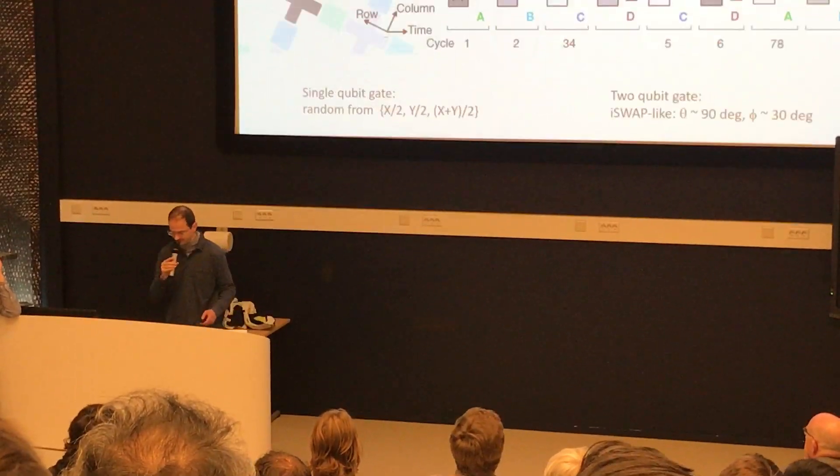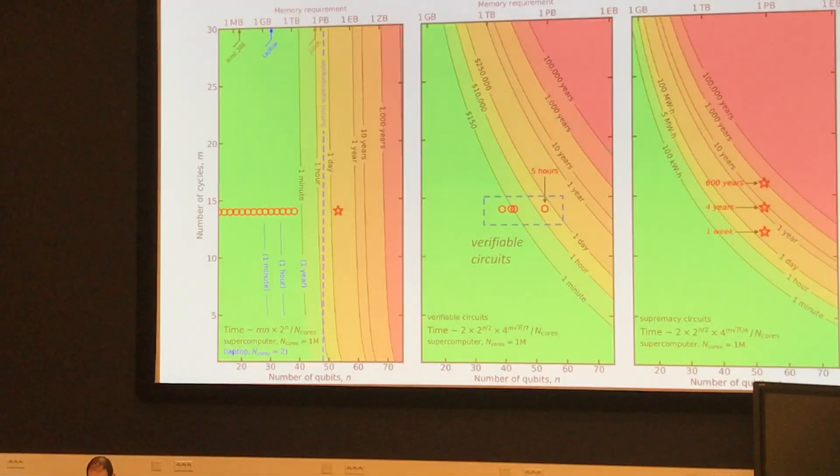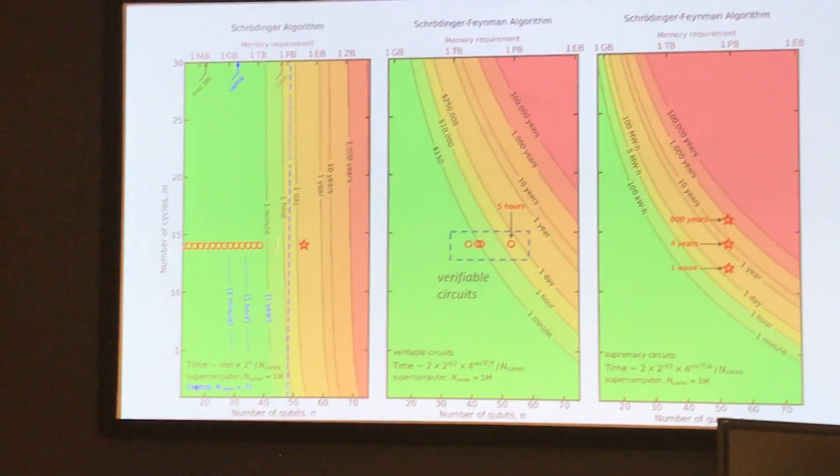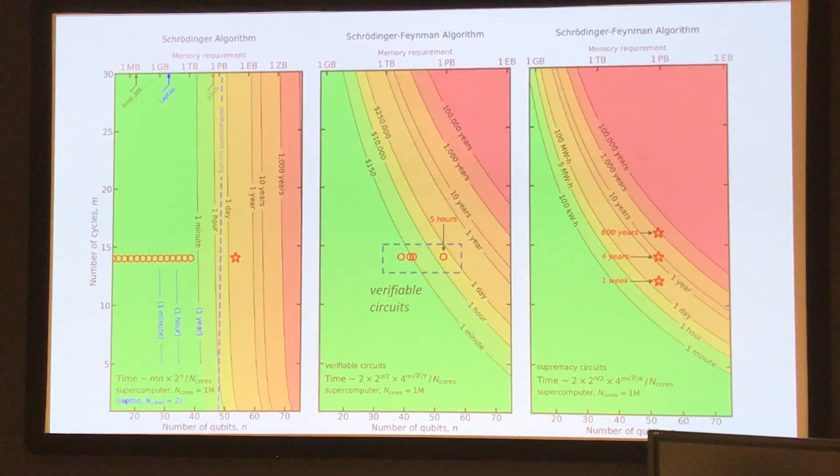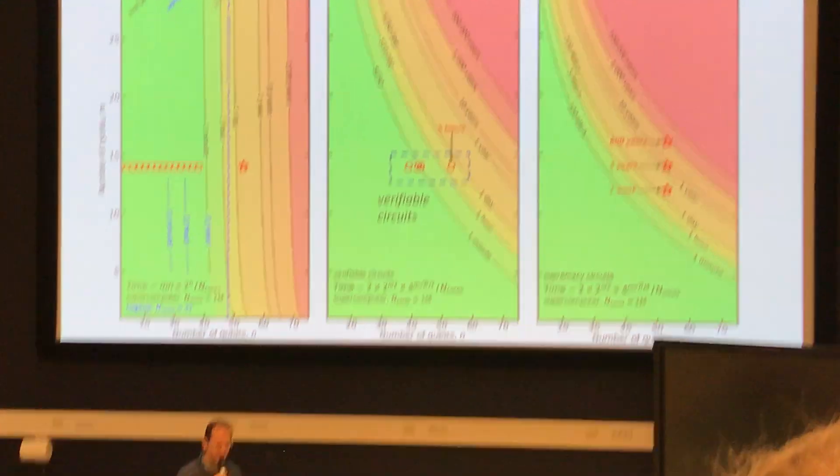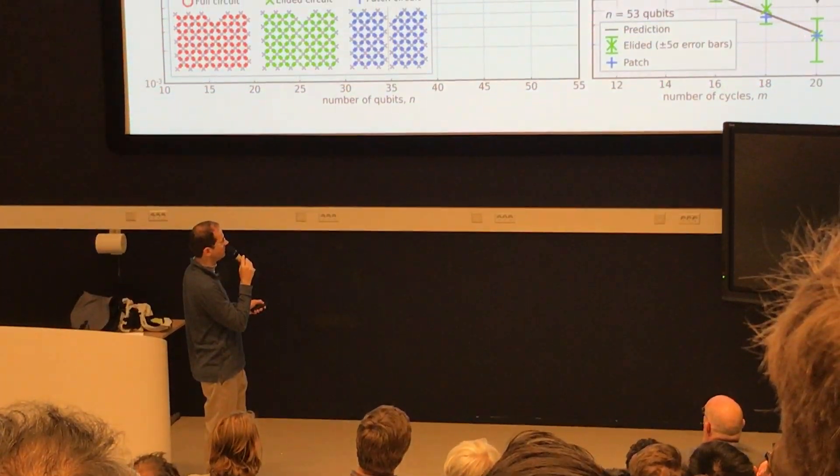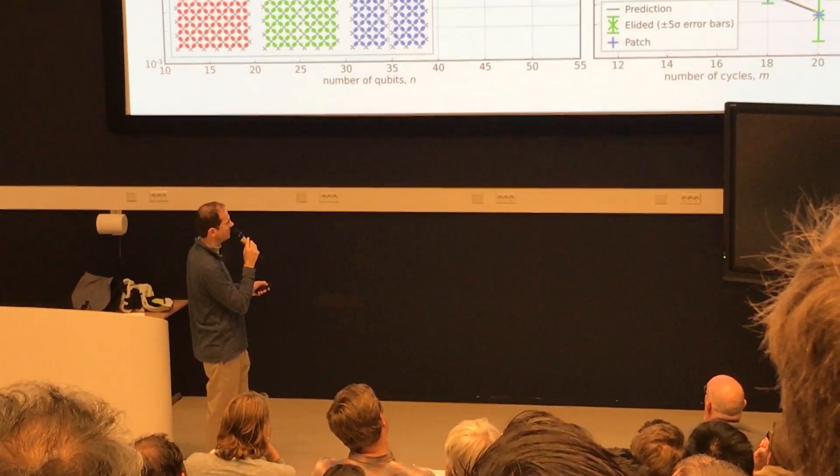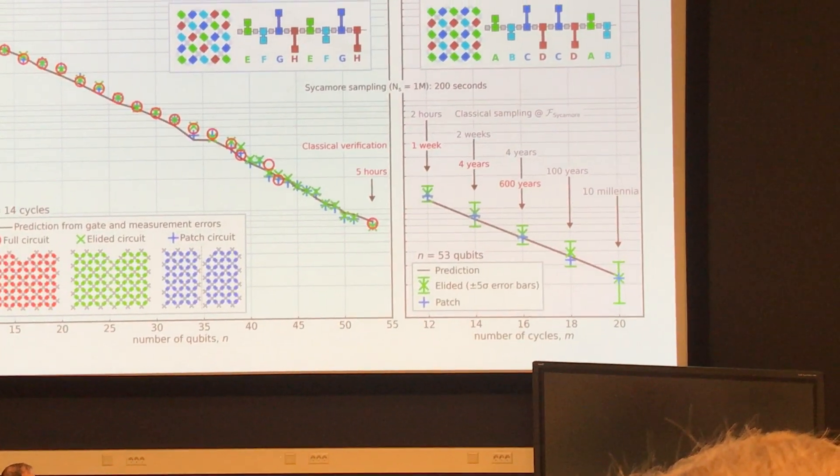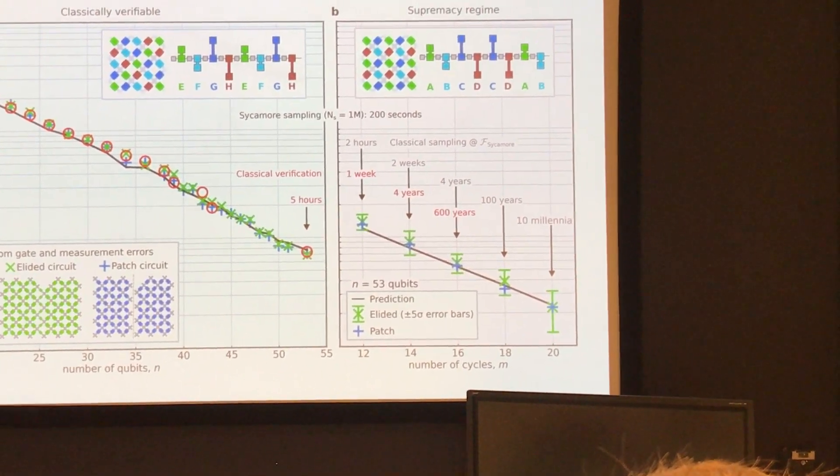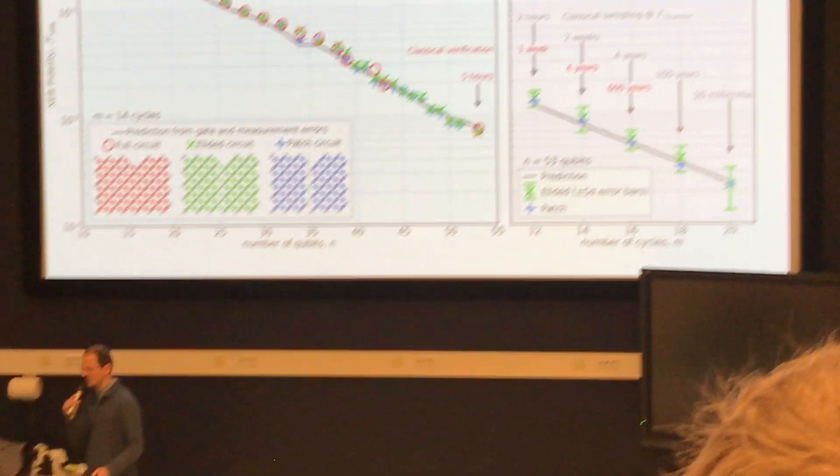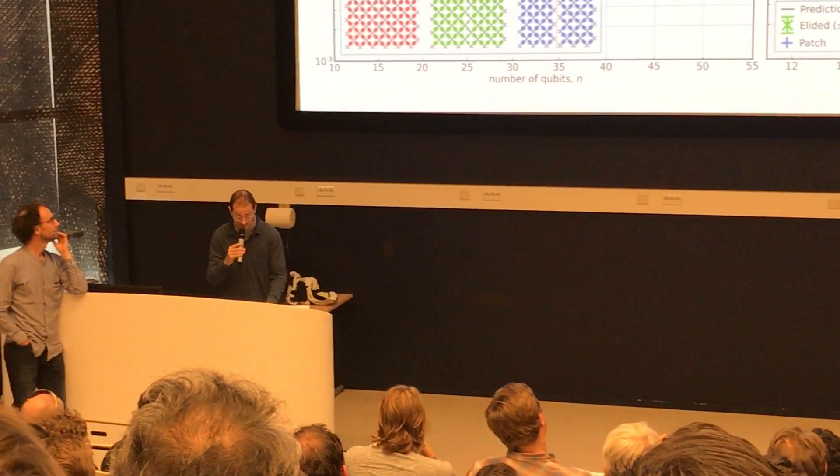So basically, they left this brute force solution, we could do it in two and a half days. Mind you that we ran each of these, I think there were 10 circuits each. So to simulate that, you need 10 times the two and a half days. So that will be a month already.